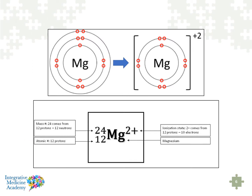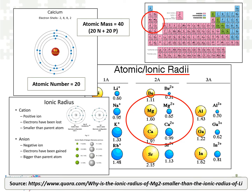So when you look at magnesium — same with calcium, for example — it has a plus-2 charge. It's lost its two outer electrons, so its ionization state is plus-2, and therefore it's called a cation. An anion is something that carries a negative charge. Calcium also has a 2-plus charge, beryllium also has a 2-plus, and so does magnesium. They're both 2-plus cations, which means they can bind to an anion that carries a negative charge.